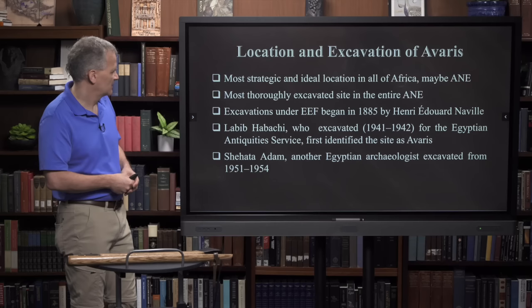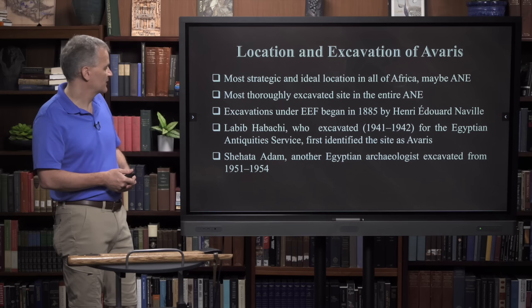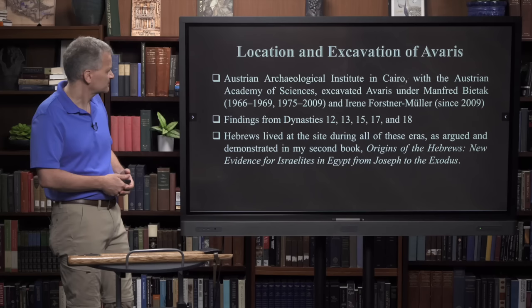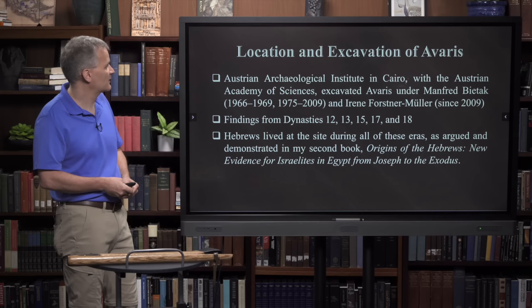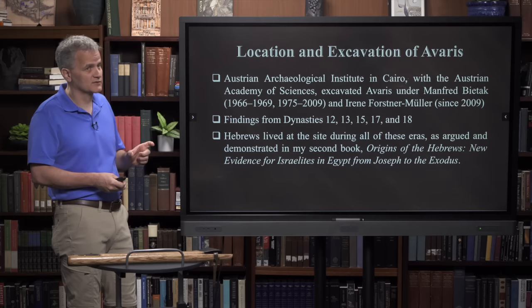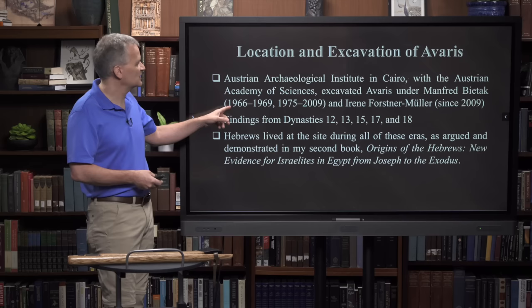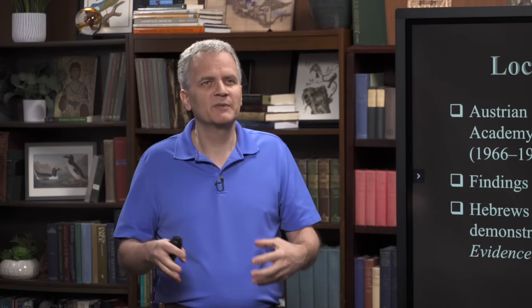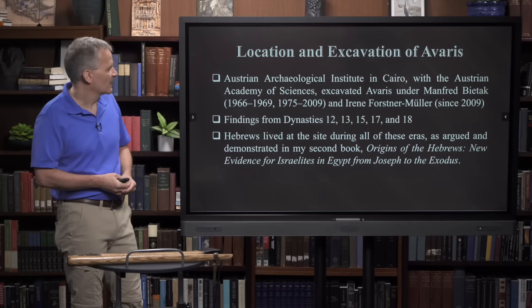Then in 1951 to 1954, a man named Shahada Adam, another Egyptian archaeologist, excavated at the site and found a lot more important material that prompted future excavations. The Austrian Archaeological Institute in Cairo, in conjunction with the Austrian Academy of Sciences, started excavating under Manfred Bietak in 1966. He was chief director from 1966 to 1969 and then 1975 to 2009 - an incredibly long service - and significantly excavated the site of Avaris.